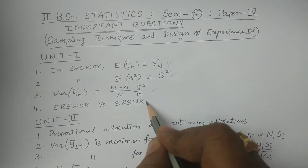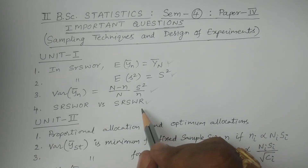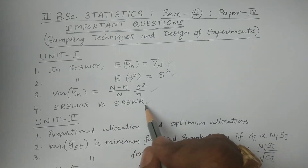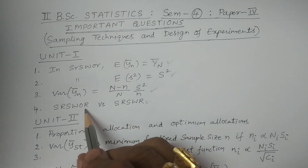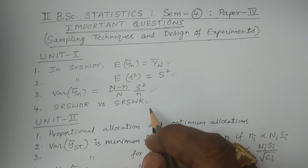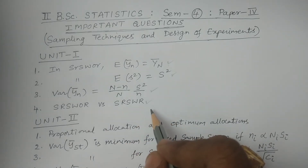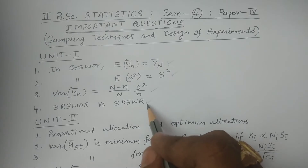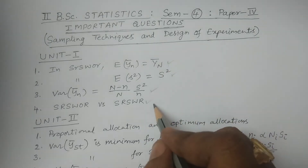Then it takes an extra question. You may also be asked to distinguish between SRSWOR and SRSWR — simple random sampling with replacement versus without replacement. The differences are the key thing.